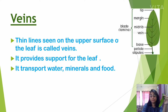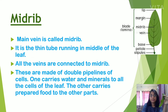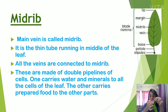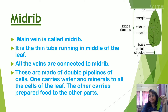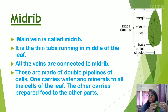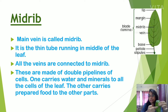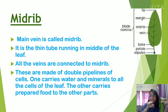Can you see the middle line? That is called the midrib. The midrib is the main vein — it is the thin tube running in the middle of the leaf. All the veins are connected to the midrib.